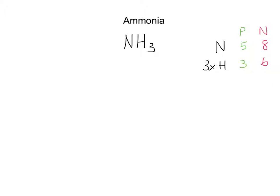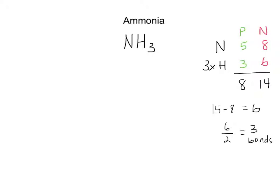The difference between what we have and what we need is going to allow us to predict how many bonds will form. A quick sum shows we have eight total valence electrons and fourteen total that they'd ideally like to have in order to have full valence shells. The difference is six. We know each bond is fundamentally two electrons, so we divide by two and see that three bonds are necessary — three bonds for every ammonia molecule.